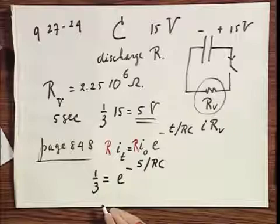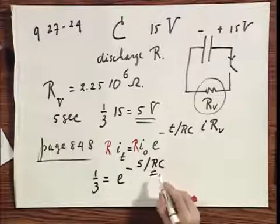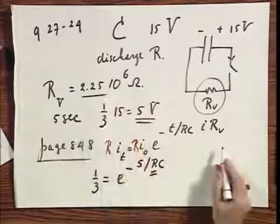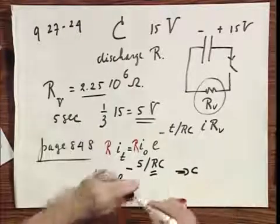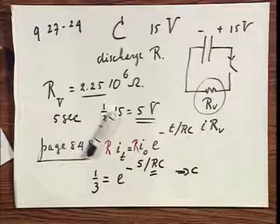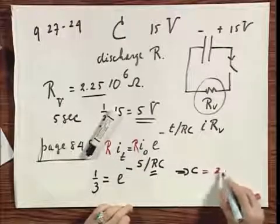Well, you know R. 2.25 mega-ohms. So out pops C, and I found that C equals two micro-farad.